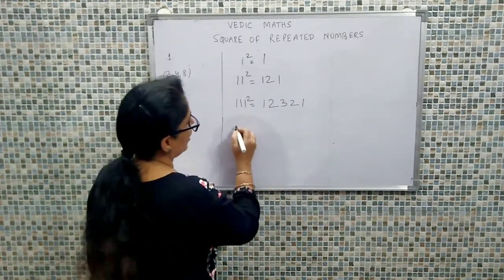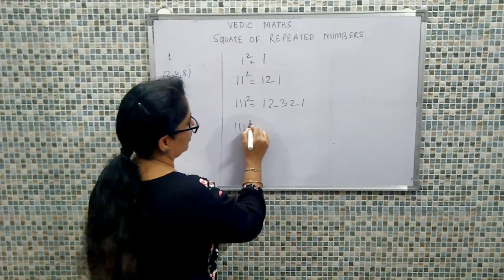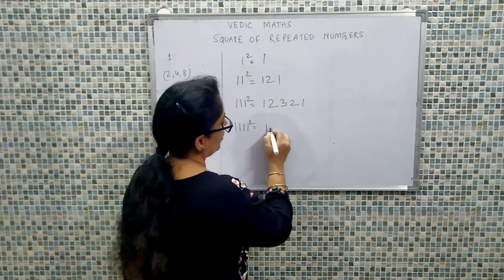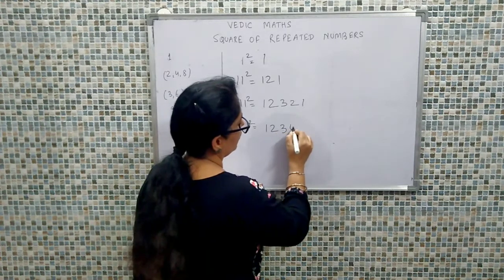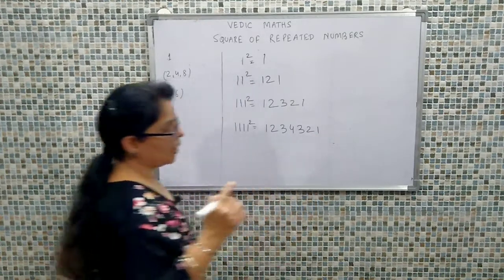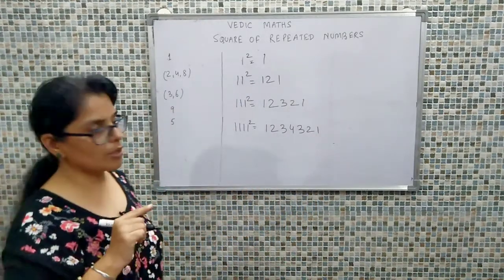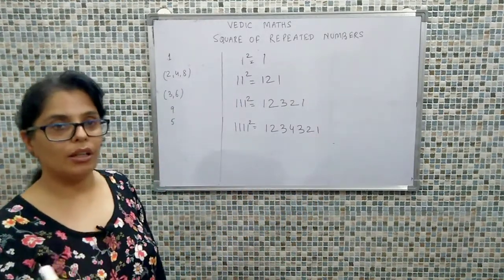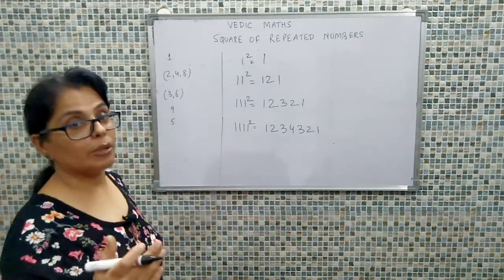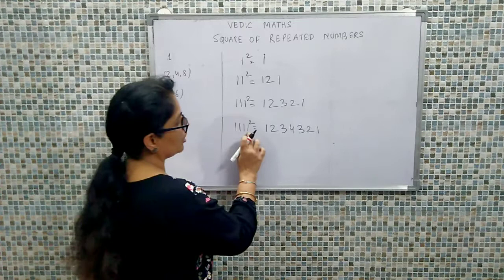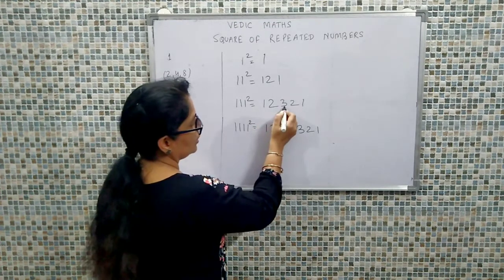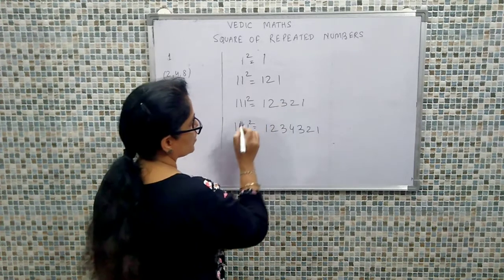Next, agar humara one chaar bar hai, one agar chaar bar hai toh logically it will go: one, two, three, four — four tak. Then three, two, one. So the pattern for ones always goes in increasing order first and then decreasing order. The increasing order depends on how many ones are in the number.